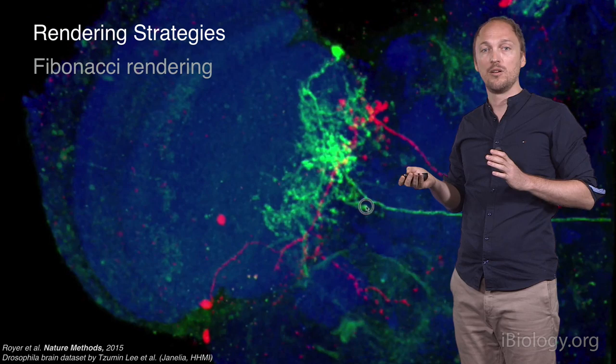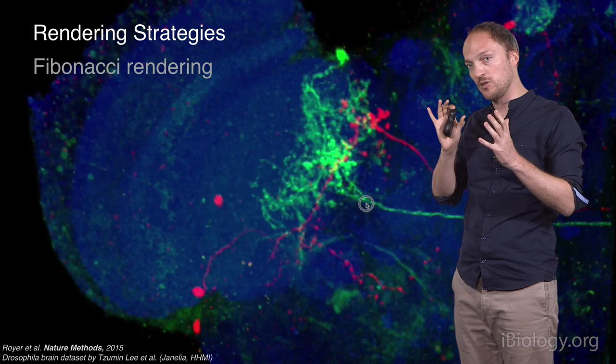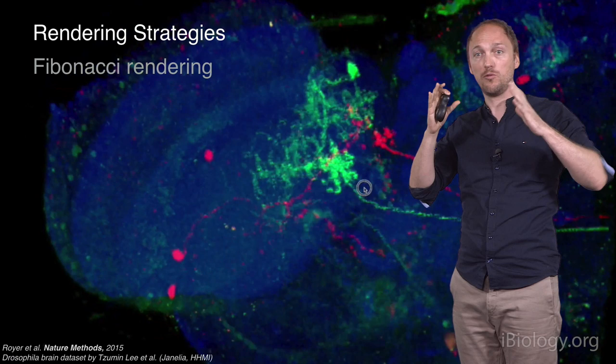Here is how it looks like in practice. This is a very large multichannel image of neurons within the Drosophila brain. As you can see, interaction is fluid, and quality recovers as soon as the movement is stopped. The multipass algorithm is active during interaction, and when we stop interacting with the volume, the image is refined and finally displayed at its full quality.